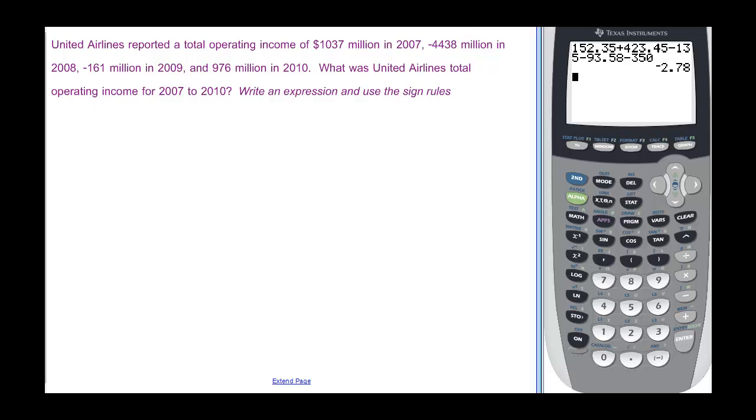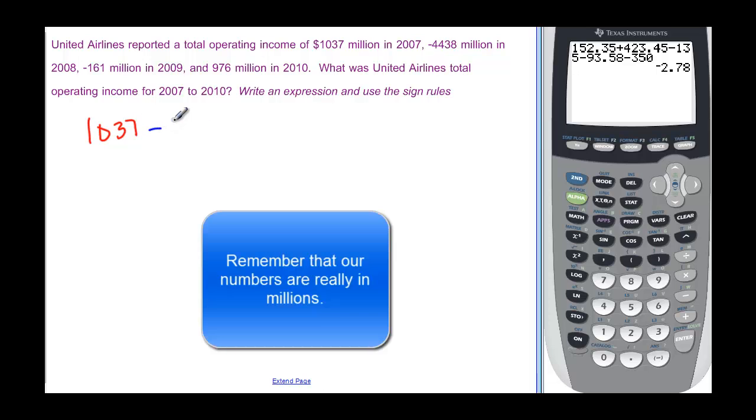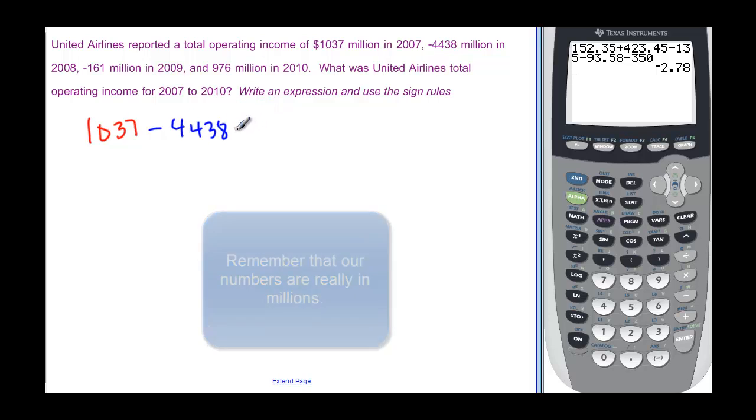So we have a positive $1037. And then we're going to subtract 4,438. All of these being million. And we're going to subtract 161 million. And then we're going to add 976. So again, before we go to the calculator, let's see if we can make sense out of this.